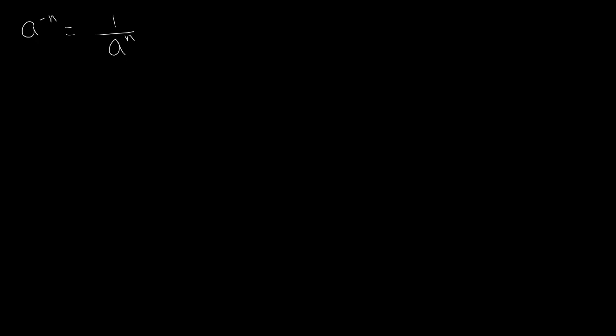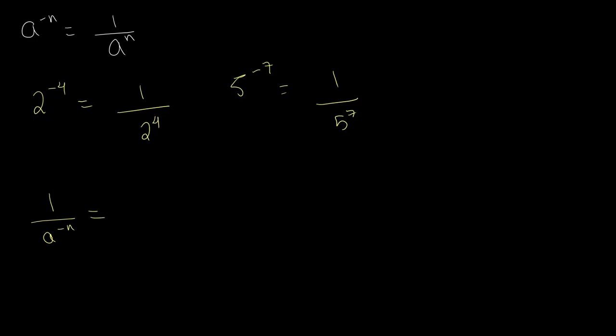The next law is when we take any number to the power of a negative number. a to the power of negative n is equal to one over a to the power of n. For example, two to the power of negative four equals one over two to the power of four, and five to the power of negative seven equals one divided by five to the power of seven. Also note that one over a to the power of negative n equals a to the power of n, because one over a to the power of negative n equals one over one over a to the power of n, and taking the reciprocal gives a to the power of n.